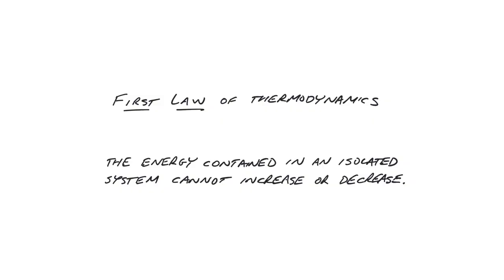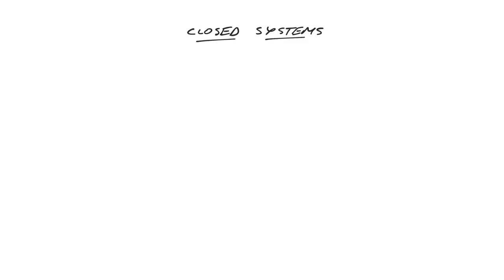In chemical engineering, the first law takes many forms. However, in thermodynamics we usually work with two particular forms, depending on whether the system is a closed or open system. For closed systems, the question we usually seek to address is the following: imagine we have a control volume containing a group of molecules in a particular equilibrium state A, with total internal energy UA. Because the system is closed, no molecules can enter or exit.